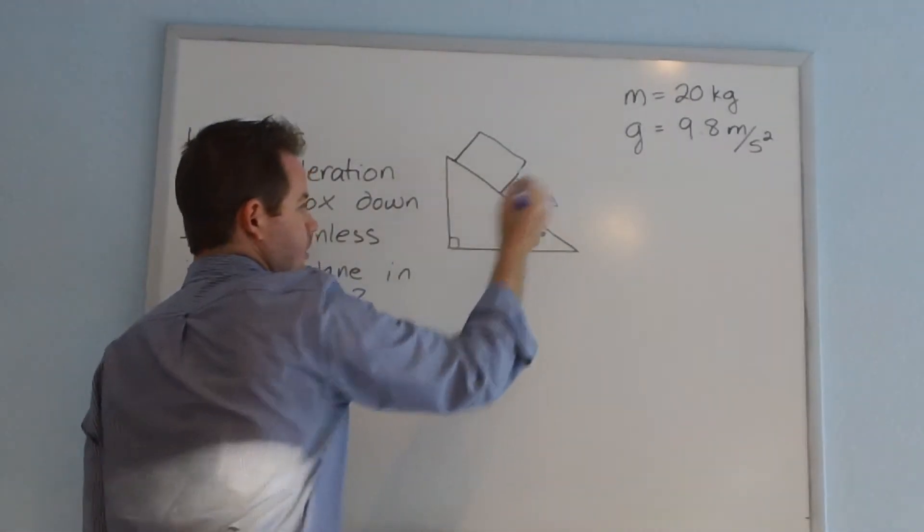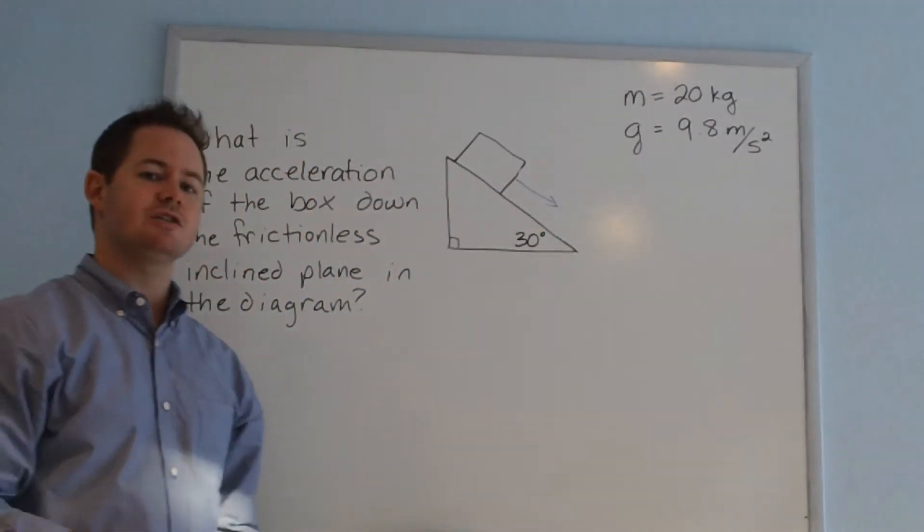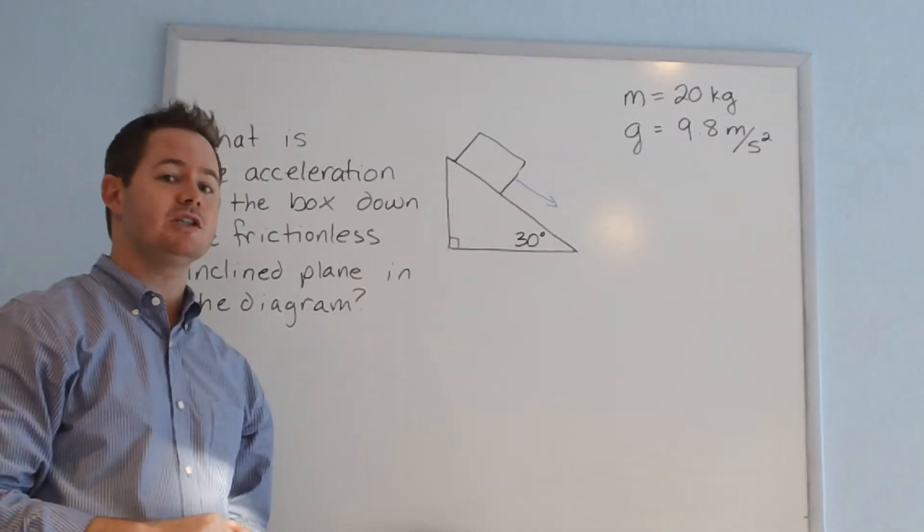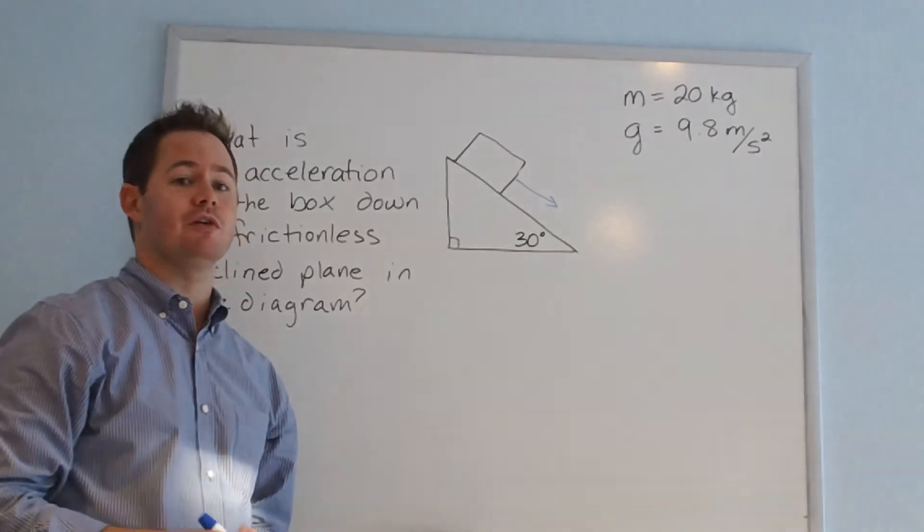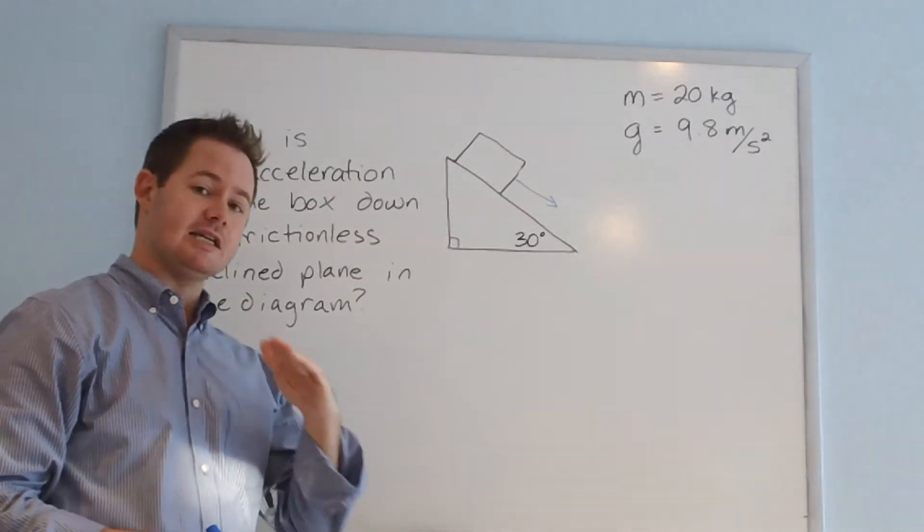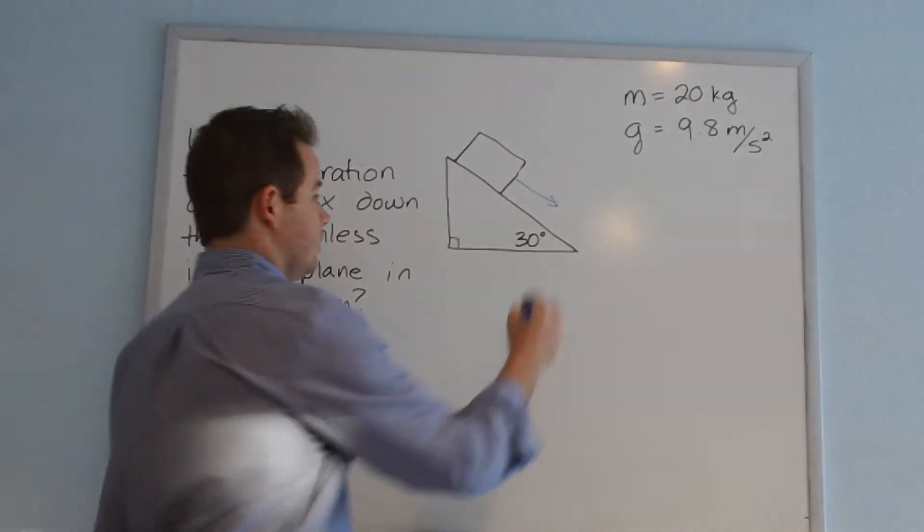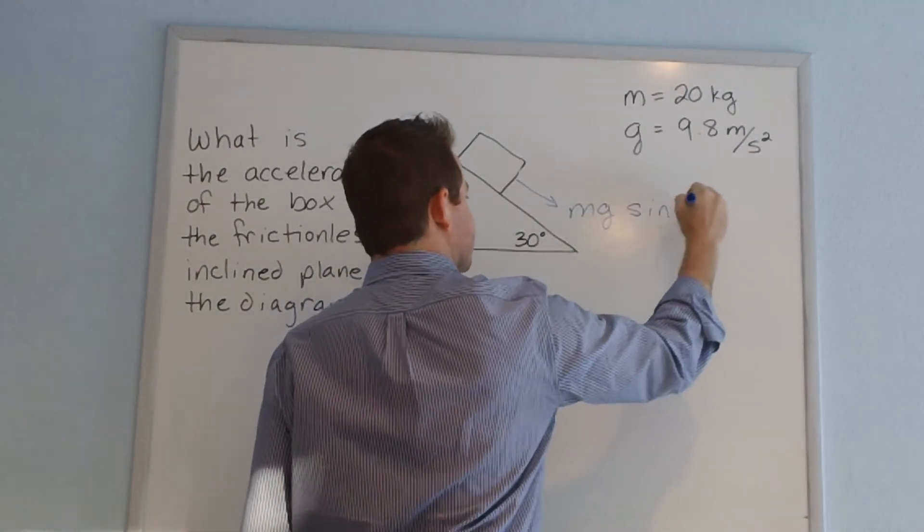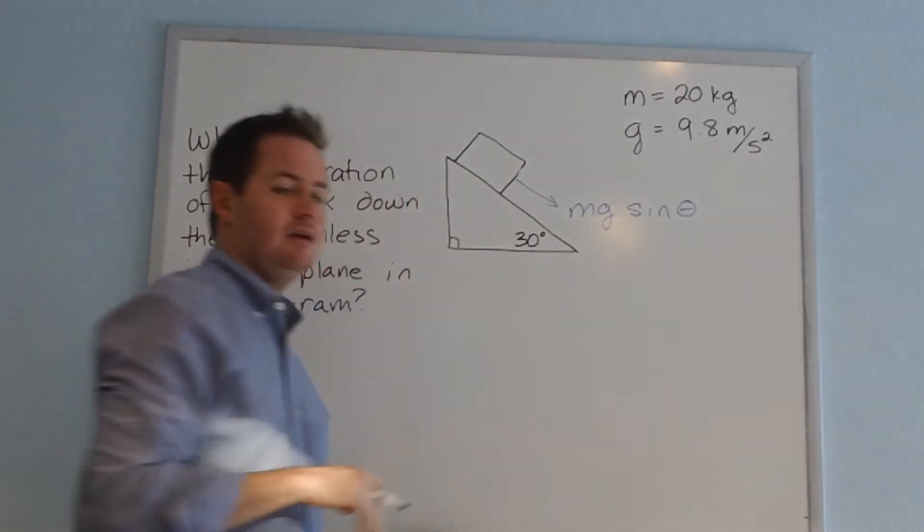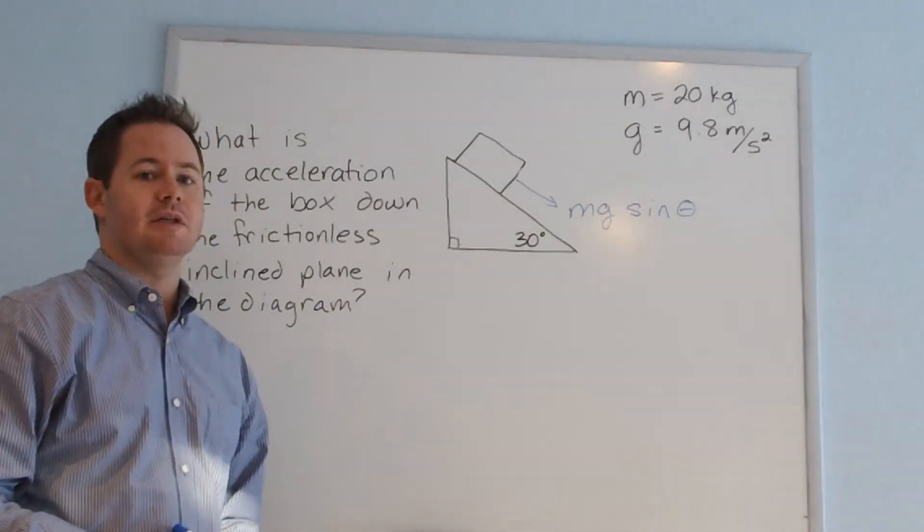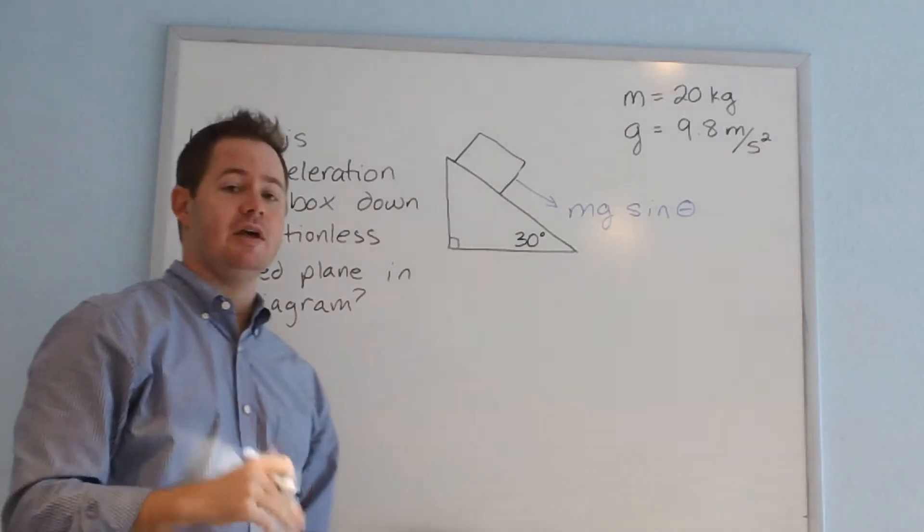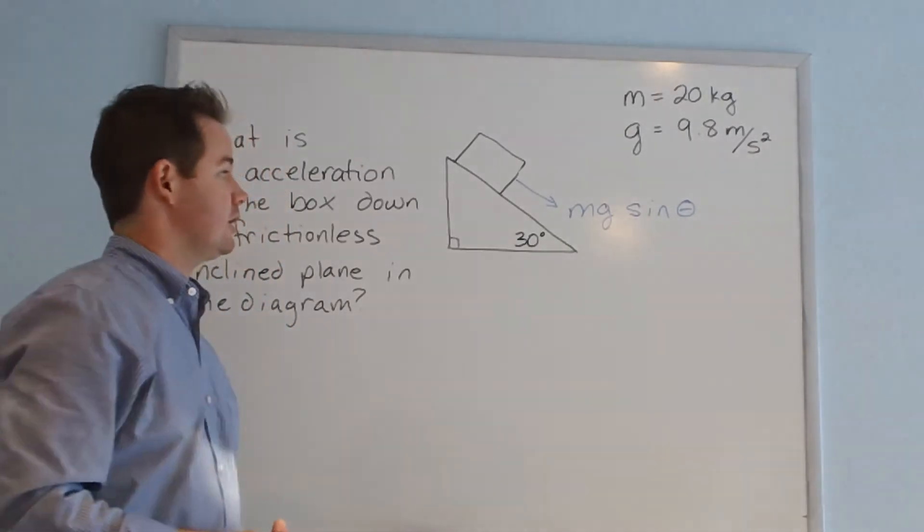So first, to figure out acceleration in this direction, we need to find force in that direction. And the equation that we will always use when you're looking for the force of an object sliding down an inclined plane will be mg sin theta. m being the mass of the object, g your acceleration due to gravity, and theta the angle of your inclined plane.